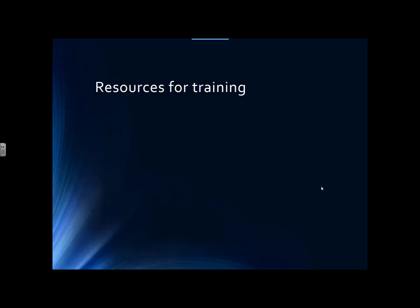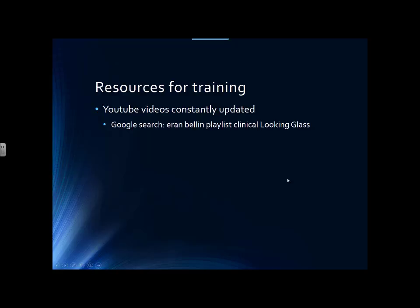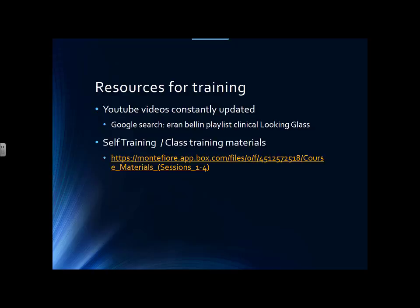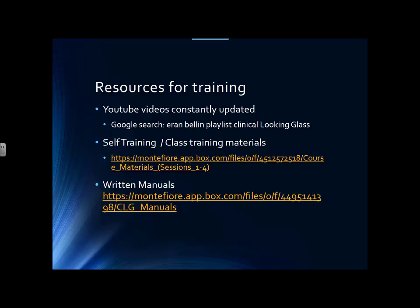Resources for Training. We have YouTube videos that are constantly updated. To find the YouTube playlist, go to Google and search using the following terms: Aron Bellin, Playlist, Clinical Looking Glass — and it will take you to the playlist with all the relevant videos. We have self-training guides and class training materials available at a Box address. Since you all have a Box account, you should be able to access this directly. We also have written manuals available through your Box account.